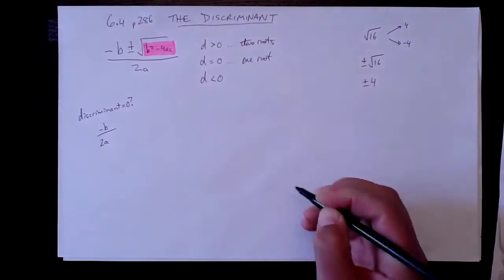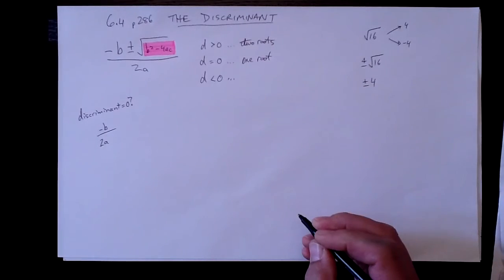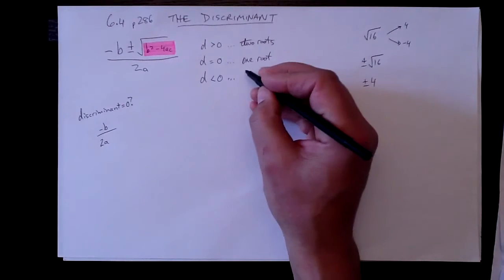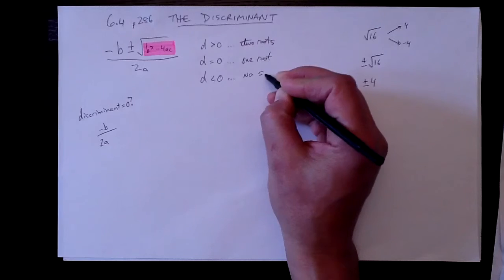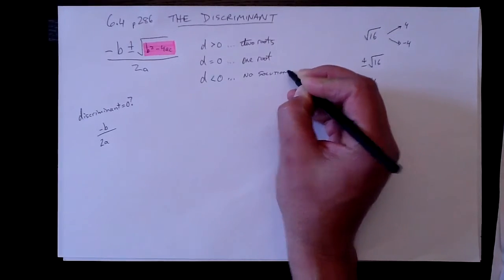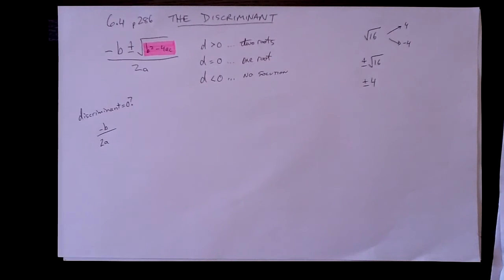And if d is less than zero, a negative number, then we'd be trying to take the square root of a negative number, and there is no solution. There's no way to solve the problem.